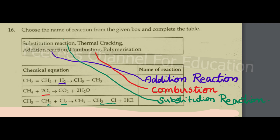Chlorine will add as HCl to give CH₃Cl. Ethyl chloride is used — plus HCl. That is a substitution reaction.